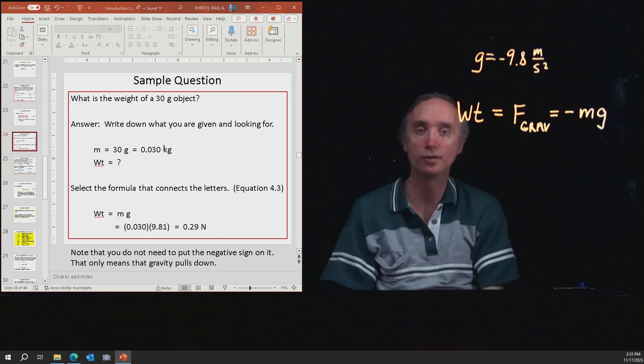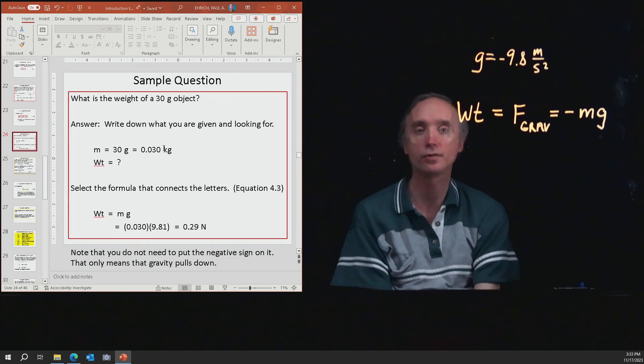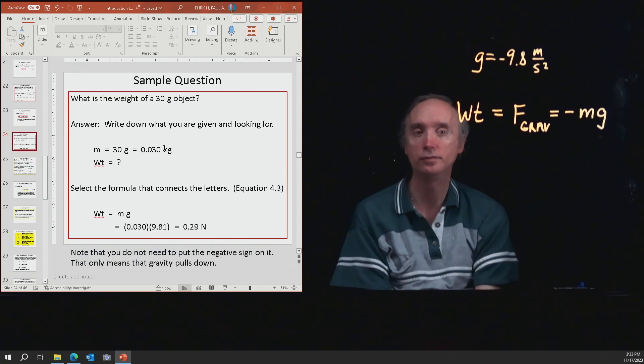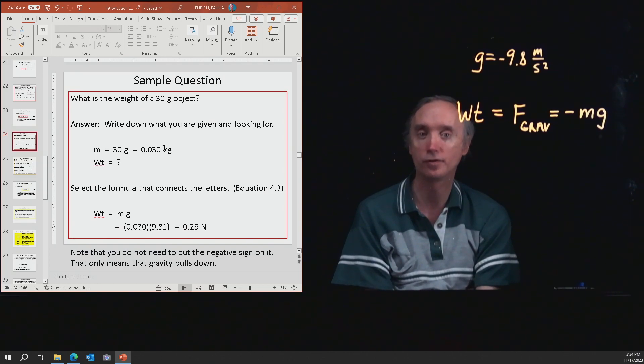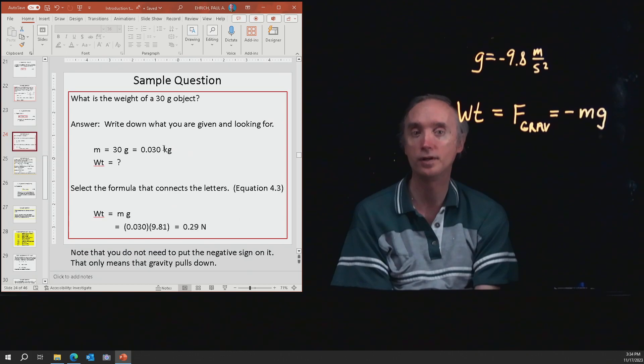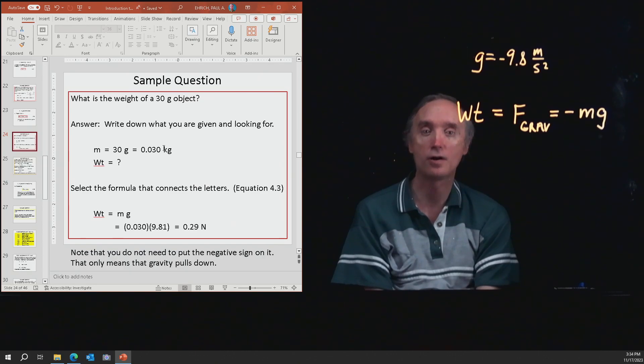So let's do an example here. What is the weight of a 30 gram object? So first we're going to write down what we're given and what we're looking for. So the mass, m, is going to be 30 grams, but that's the wrong unit. So the official metric unit for mass is the kilogram. Kilo means a thousand. So we need to take 30 divided by a thousand and that's going to be 0.030 kilograms. And then we want to find the weight.